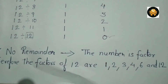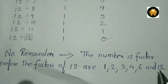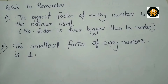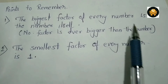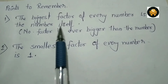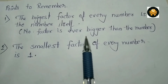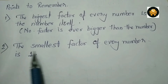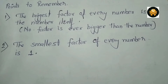The smallest factor of 12 is 1 and the biggest factor of 12 is 12. Here are 2 points to keep in mind: the biggest factor of every number is the number itself, no factor is ever bigger than the number, and the smallest factor of every number is 1.